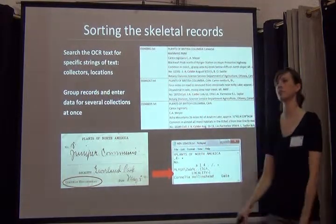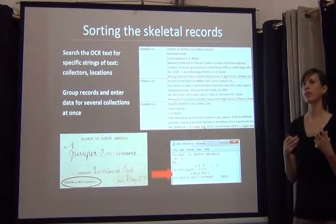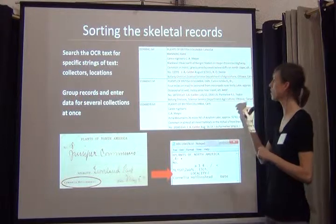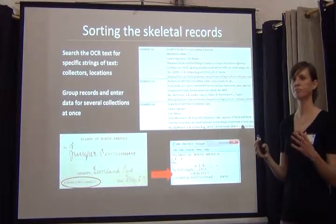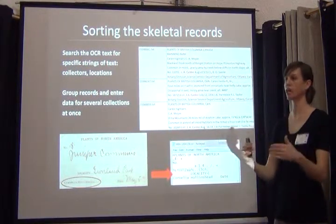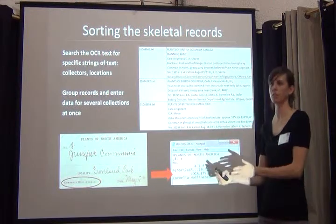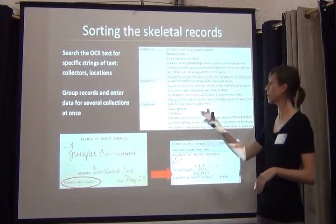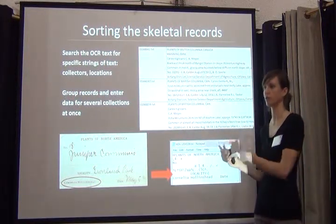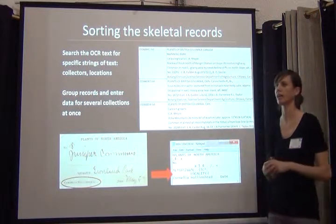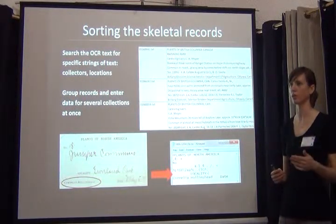What we mainly use the OCR text for at this point is sorting the records. We think that if you find all of the collections from a certain person or location on a certain date, you can use the record before to then ditto into the next record. Rather than going from one random specimen to the next random specimen, there's nothing going to link those records together. But by sorting everything by collector and doing all the collector data at once, you can then just copy and paste between records, and we've doubled or tripled our data entry rates this way. It's still a lot of manual data entry, but by dittoing you're reducing the number of keystrokes your data entry people have to perform.